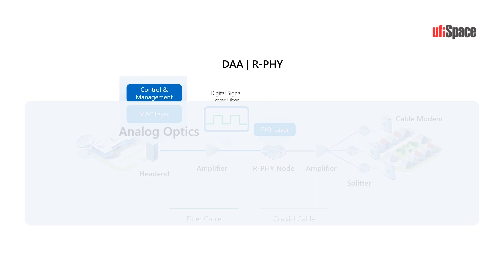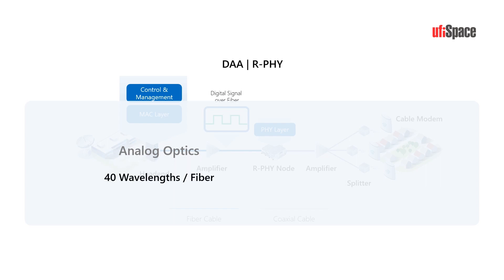According to research, the typical spacing between wavelengths in NLR optics in HFC is 100 GHz, which can allow up to 40 wavelengths on a single fiber. The spacing for digital wavelengths is 25 GHz or less, which can allow more than 160 wavelengths in the DAA network.